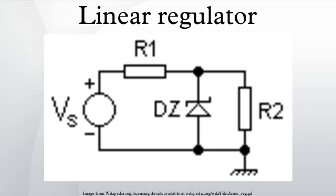Fixed three-terminal linear regulators are commonly available to generate fixed voltages of +3V, ±5V, 6V, 9V, 12V, or 15V, when the load is less than 1.5A. The 78XX series regulates positive voltages while the 79XX series regulates negative voltages. Often the last two digits of the device number are the output voltage. There are variants on the 78XX series ICs, such as 78L and 78S, some of which can supply up to 2 amps.